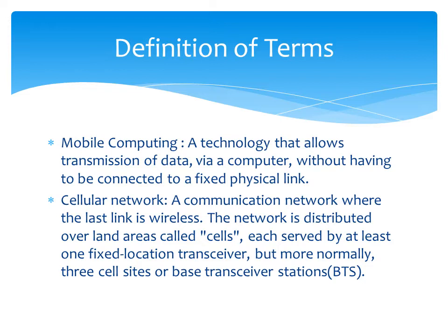A cellular network is a communication network where the last link is wireless. The network is distributed over land areas called cells. A cell is basically a regular land portion which, in graphical terms, is represented using hexagons.